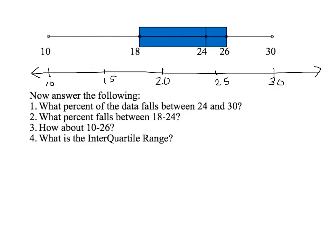Okay, so accept that my number line is kind of funky. This is what your box and whisker plot should have looked like. Your minimum was 10, Q1 was 18, Q2 or the median was 24, Q3 was 26, and then your maximum was 30.